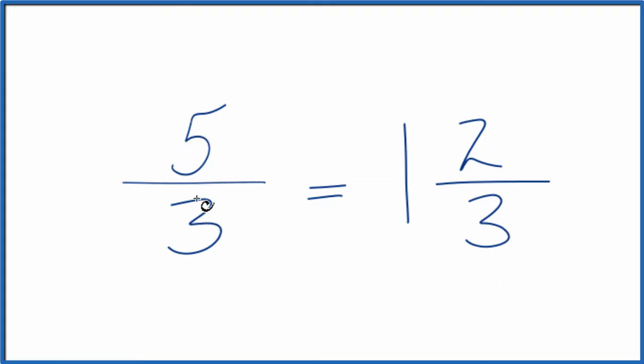So 5 thirds, the improper fraction, is equal to the mixed number 1 and 2 thirds. But in answer to our original question, the fraction 5 thirds is already simplified. This is Dr. B, thanks for watching.